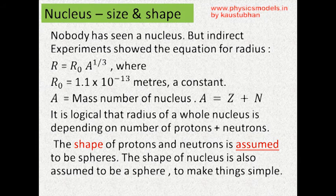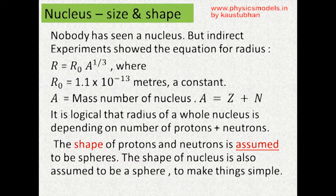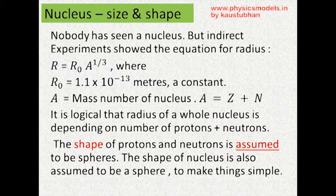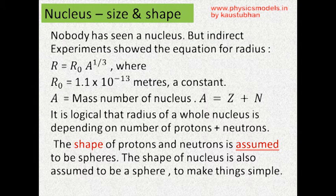Nobody has actually seen a nucleus. Now indirect experiments by scientists gave an equation: r, or the radius of a nucleus, is equal to r₀ into A to the power 1 by 3. Now r₀ is a constant, 1.1 into 10 to the power minus 13 meters. It's a very, very small number.